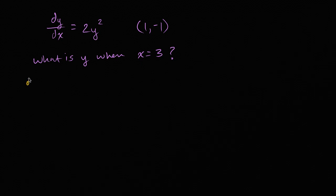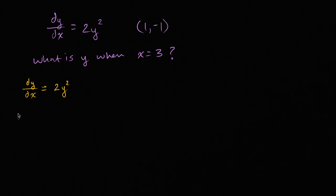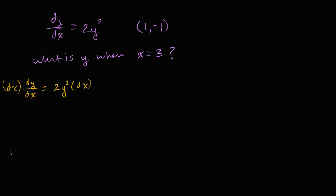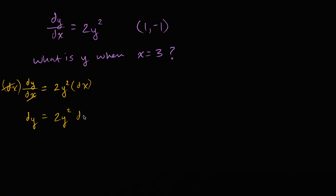Let me just rewrite it: dy/dx is equal to two y squared. We can multiply both sides by dx — that cancels with that if we treat it as just a variable — so we're going to have dy is equal to two y squared dx. We're not quite done yet; we need to get this two y squared on the left-hand side, so we can divide both sides by two y squared.